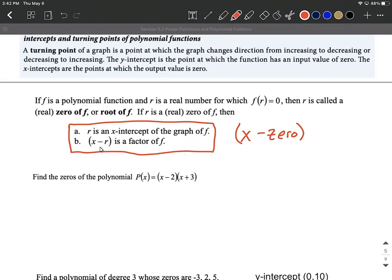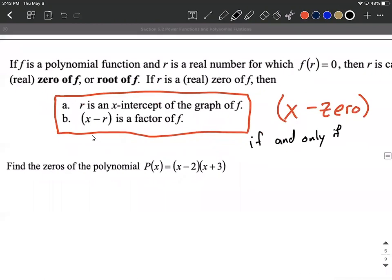This is also referred to as an if and only if statement. If and only if because basically you can start with either side. If you are given the zero you can get a factor or if we have a factor given to us we can work backwards and we get a zero that goes with it. Let's try doing that with this next problem.